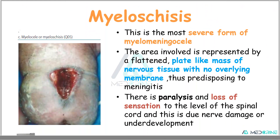There is another severe form of Myelomeningocele known as Myeloschisis, which is considered the most severe form of Myelomeningocele. The area involved is represented by a flattened, plate-like mass of nervous tissue with no underlying membrane, predisposing these patients to developing meningitis. There are usually cases of paralysis and loss of sensation in Myeloschisis at the level of the spinal cord where the deformity is located.